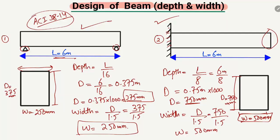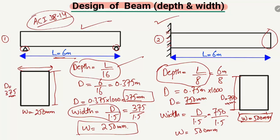We have found the minimum depth and width for both beam types. The formulas differ: L/16 for depth of a simply supported beam and L/8 for a cantilever beam, while the width formula d/1.5 remains the same for both. For continuous beams, overhanging beams, and other types, different code formulas apply. I hope you understand — don't forget to subscribe for more engineering videos. Thank you for watching.